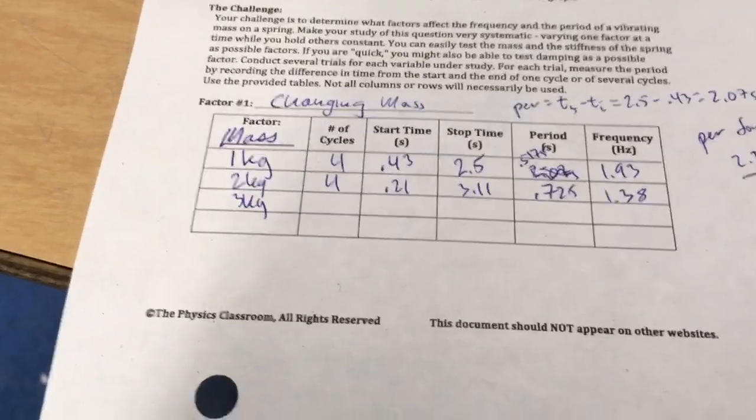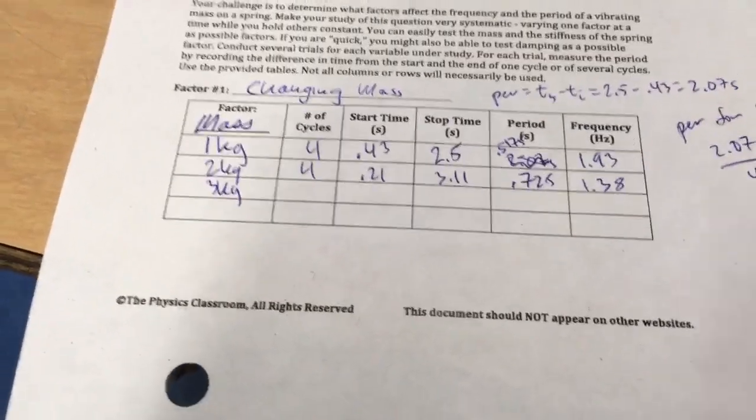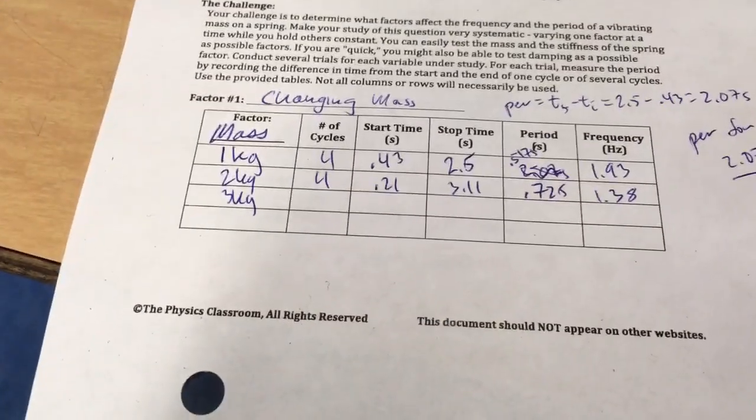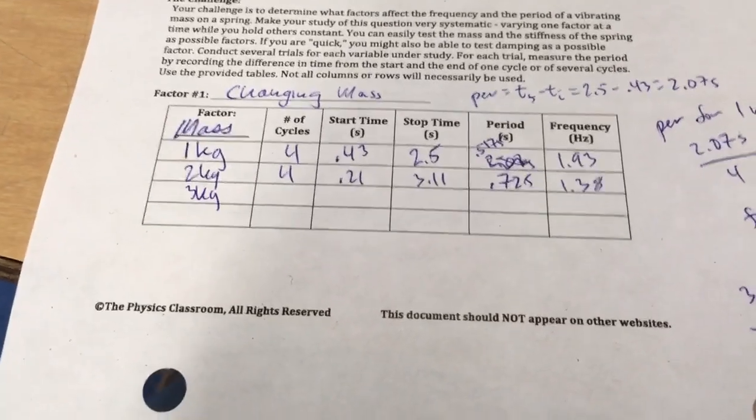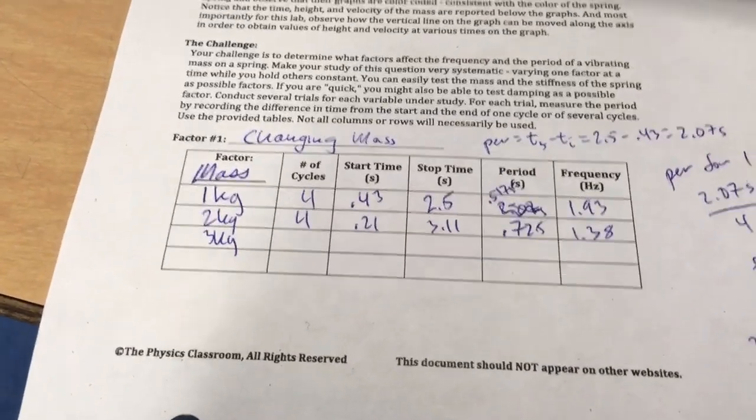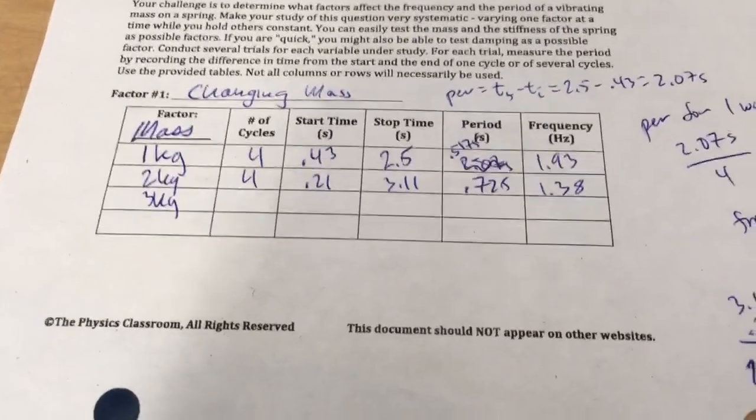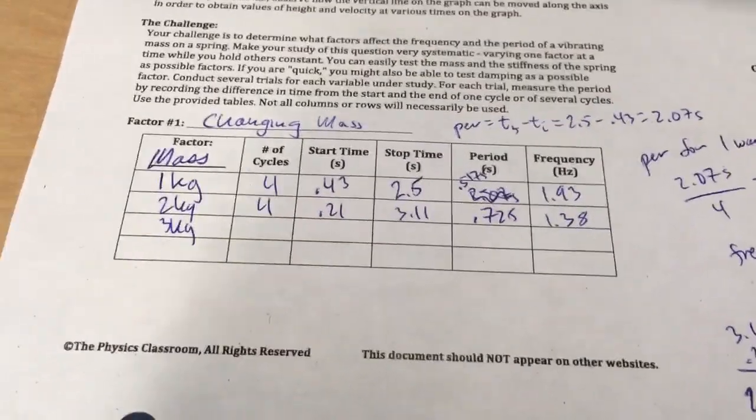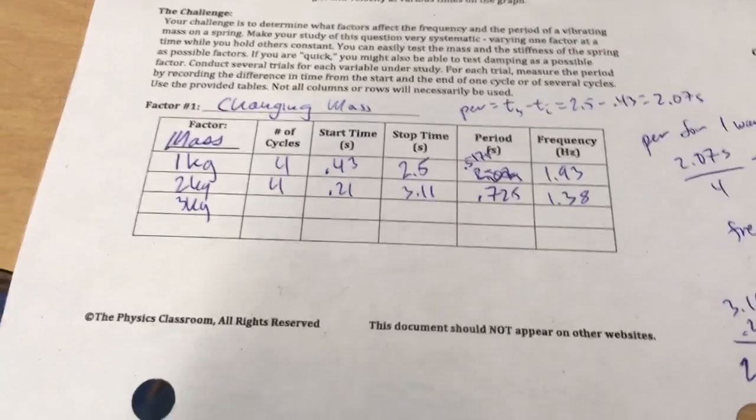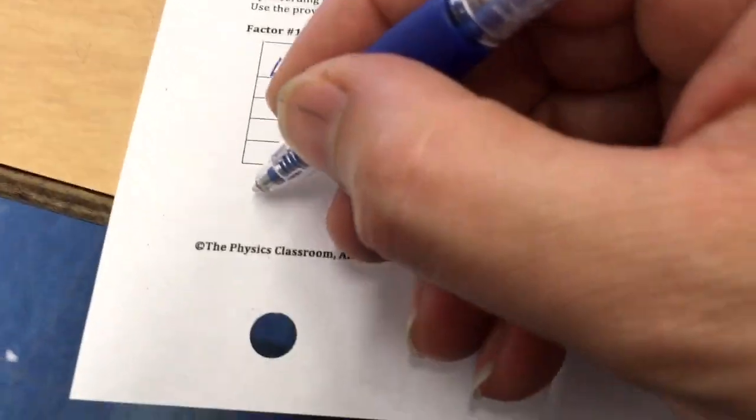Mass, right? So what could we say? What's a conclusion we could say? Mass affects frequency how? You could say that when you increase the mass, it does blah blah blah to the frequency. When you increase the mass, it does blah blah blah to the period. What words would you put in there?